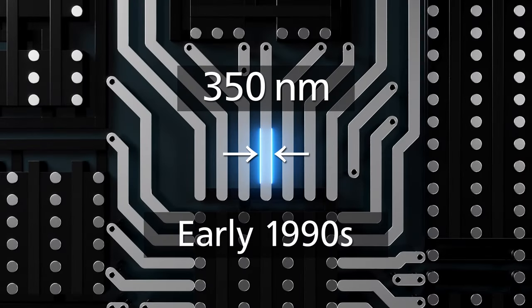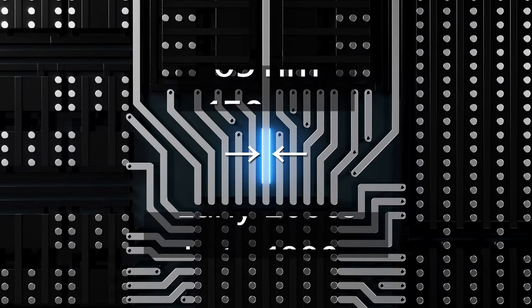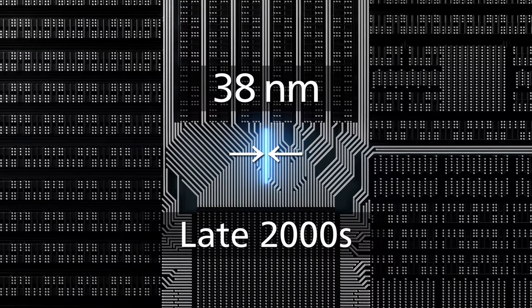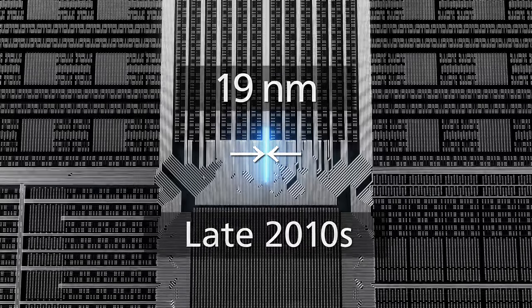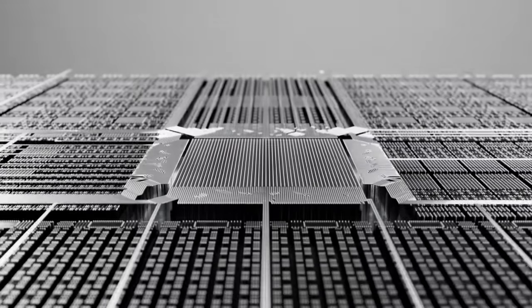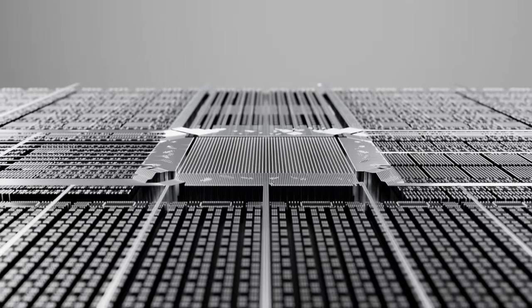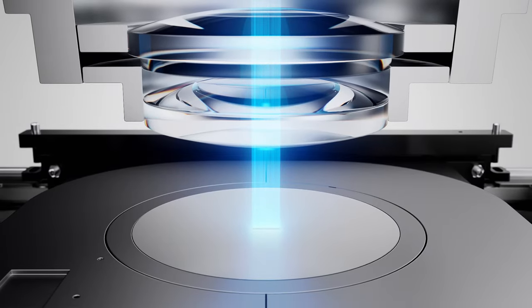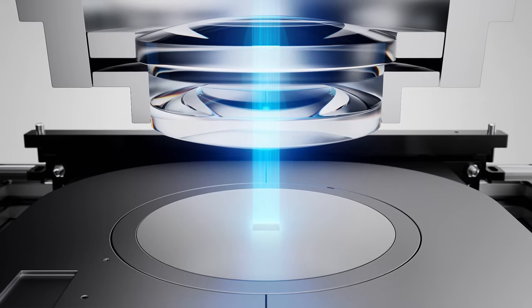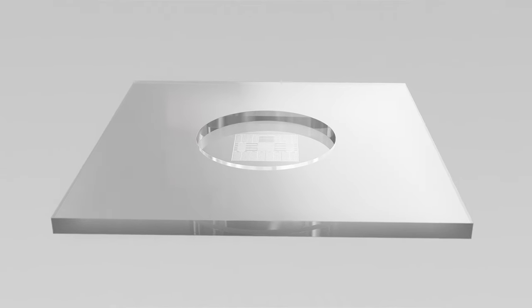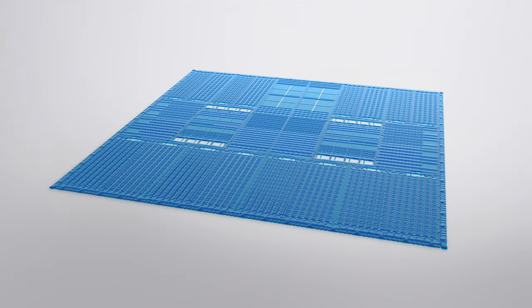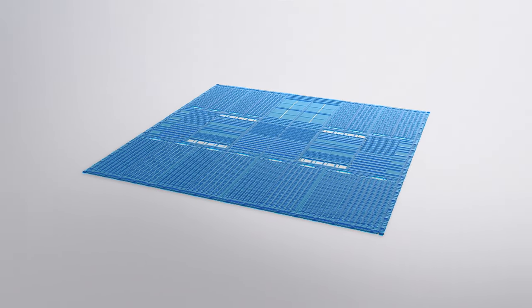Semiconductor chips evolve through efforts of circuit miniaturization to achieve the finest possible circuit patterns. Miniaturization has been realized through advances in exposure technology, which etch circuit patterns with light. But now Canon is pursuing a completely new method of circuit miniaturization.